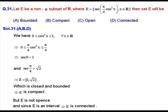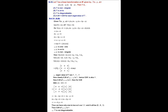Since E = [1, √2] is an interval, it is also connected. So options A, B, and D are correct. Option C is not true because 1 and √2 are elements of set E but they are not interior points of E.